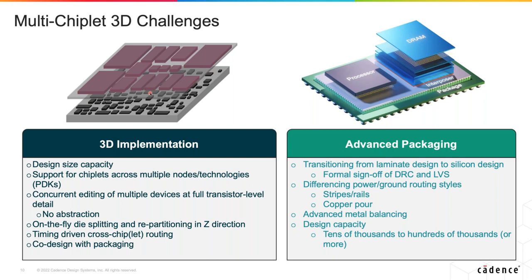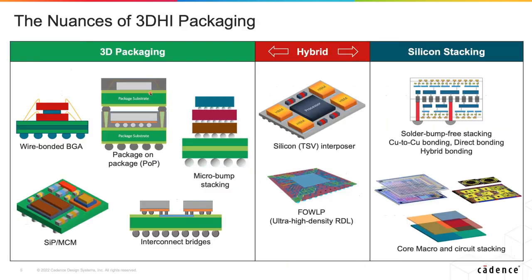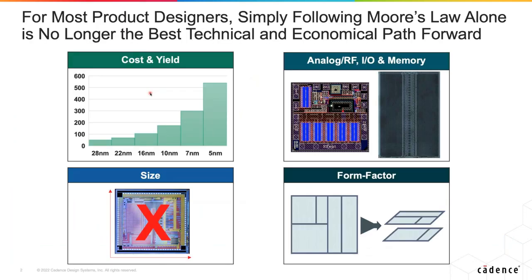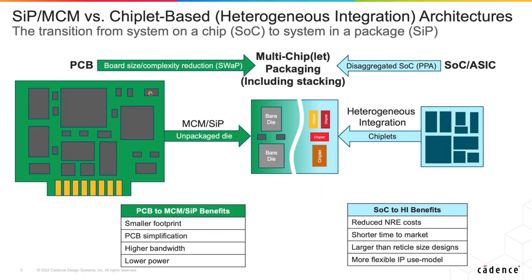Question from Bapi: going back to the use cases slides, do you see use cases segregating by packaging technology? Does system integration on the left segregate to one set of packaging technologies, and die disaggregation settle to another?